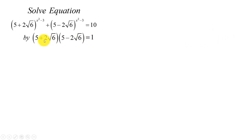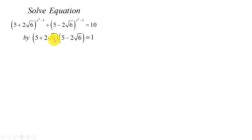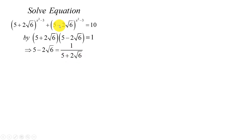Since the product of these two terms equals 1, we can find one in terms of the other. I divide both sides of this equation by (5 + 2√6), and we get: 5 - 2√6 = 1 / (5 + 2√6). Now I substitute (5 - 2√6) with 1 over (5 + 2√6).